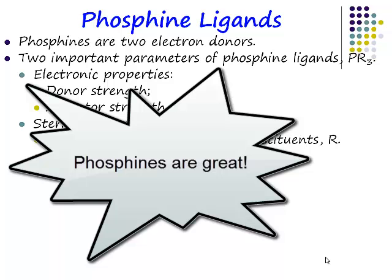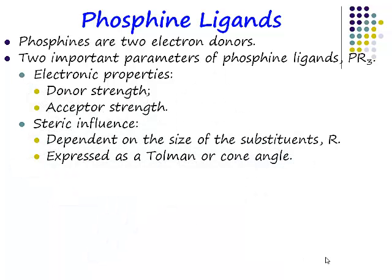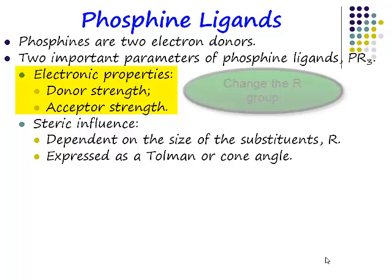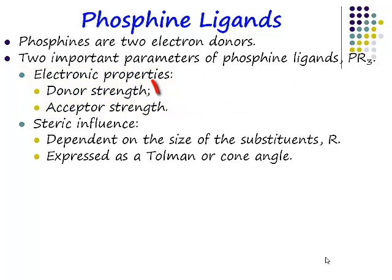Why do organometallic chemists love phosphine ligands so much? Because of their almost infinite variability and flexibility. If you have a phosphine ligand you can play all sorts of games with it. You can vary its electronic properties — how do you do this? You change the R group. You can make it a stronger donor or you can make it a better acceptor.